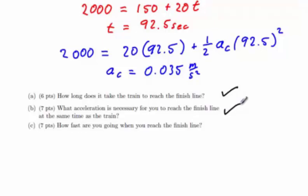The final question we need to write is a well-formed question. How fast are you going when you reach the finish line? Well, you are in the car, so this is a question asking you to specify a value for the velocity of the car. At this point, there are two reasonable approaches for making this a well-formed question. One of them is to specify reach the finish line as x car is 2,000. The other one is to specify that we reach the finish line at 92.5 seconds.